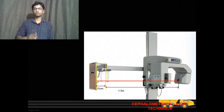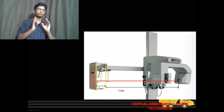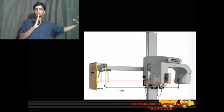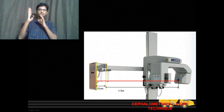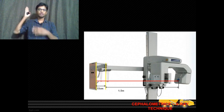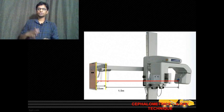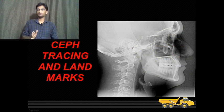For a proper parallel image, the x-ray source to the patient's mid-sagittal plane should be 1.5 meters distance, and from the mid-sagittal plane to the cassette (which holds the x-ray film) should be about 10 centimeters. Once you shoot the x-ray with these specifications, you get a correct replica of the skull — this is what a cephalogram looks like.